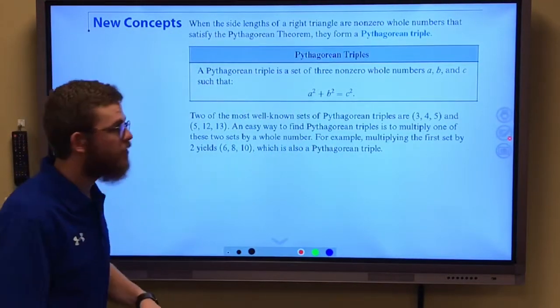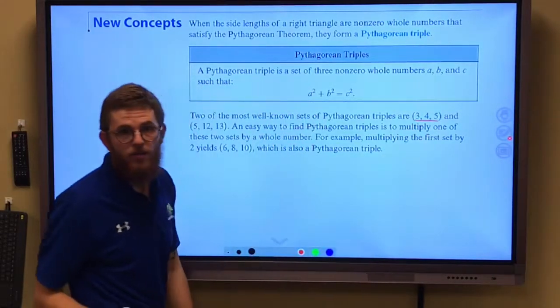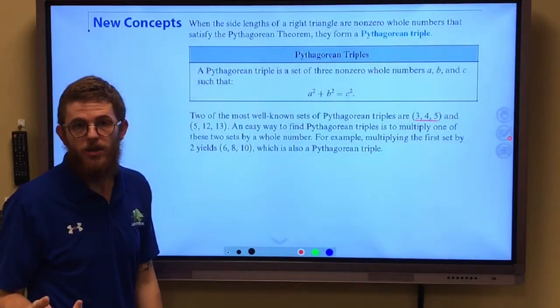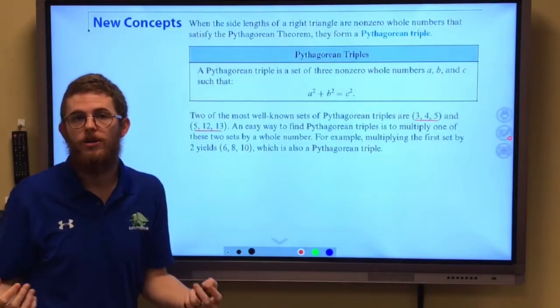You may have noticed on triangles, if you have three, four, and five, those work together to form a right triangle. 5, 12, and 13, these are some really common Pythagorean Triples.